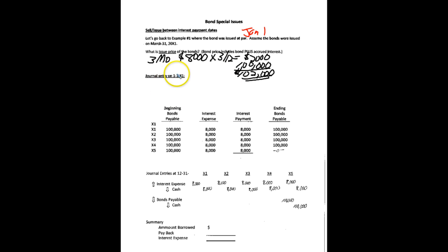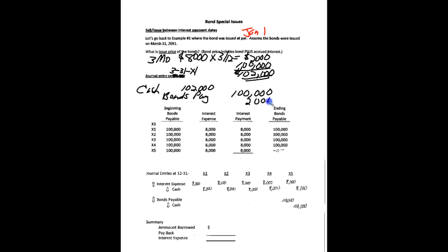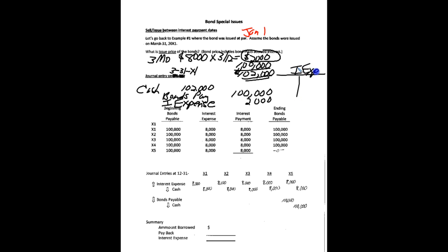Let's look at the journal entry — I see I have a mistake here; this should be March 31st for the first year. On March 31st, cash would have come in, that's the $102,000, and then we would credit bonds payable for face value. In the past, we would have put the $2,000 credit in as a premium, but the bonds didn't really sell at a premium — they really sold at $2,000 of accrued interest. So what we're going to do is credit the interest expense account, which is an odd thing to do. We know that expenses go up with debits, so it's very odd that we would have a credit in that account.